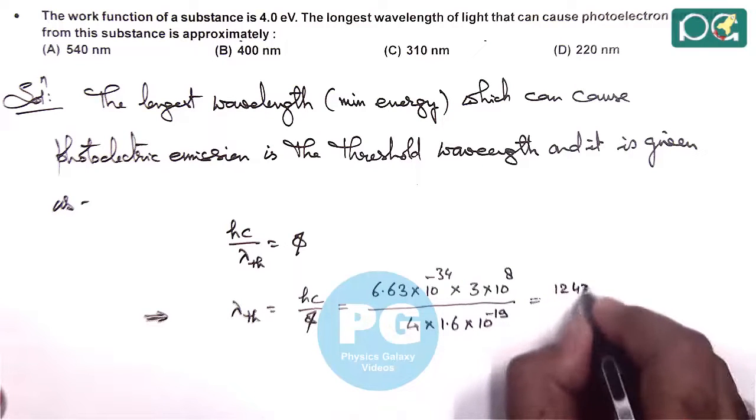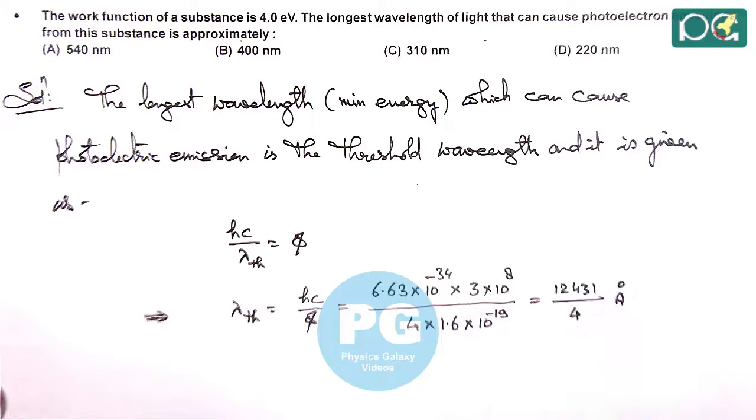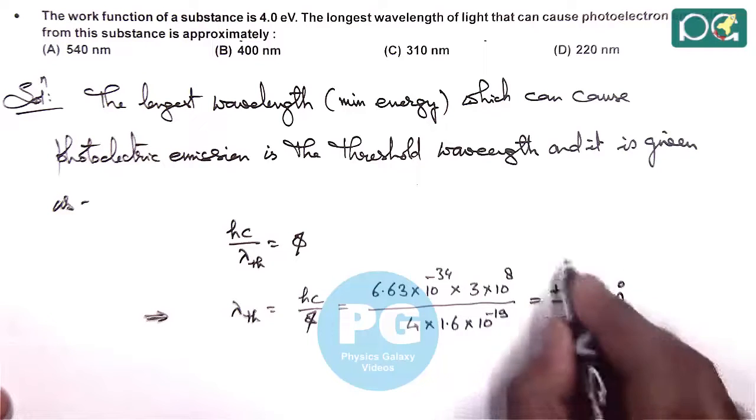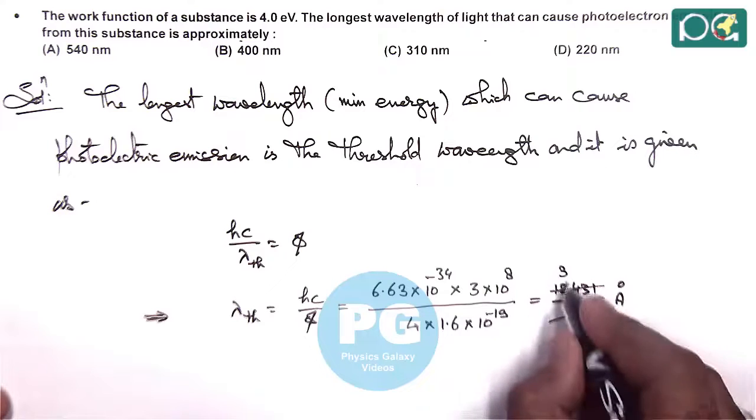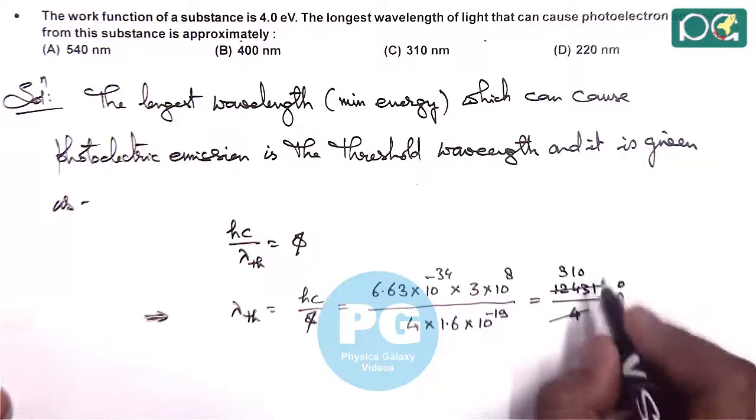We can write as 12431 divided by 4. This value will directly get in angstrom. So here if we further calculate we can cancel this 4. This is 12 and approximately we can take it 32.